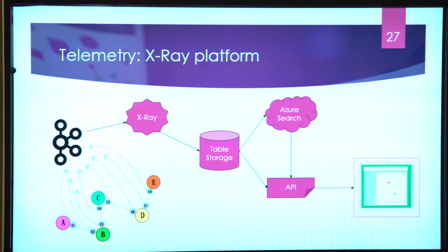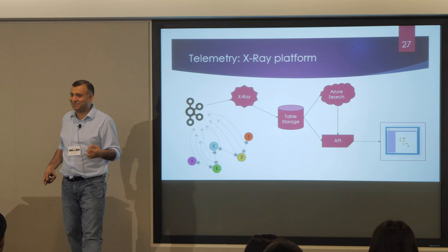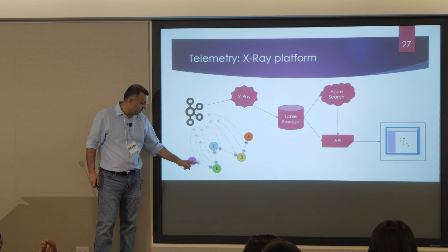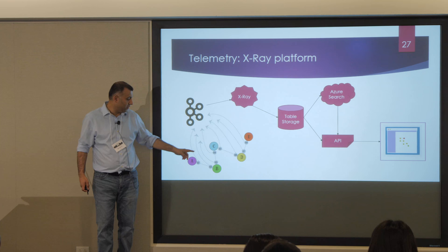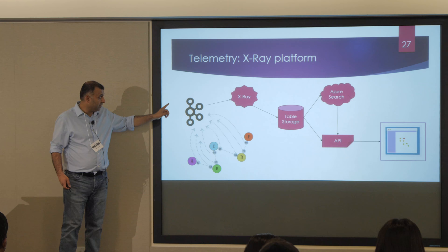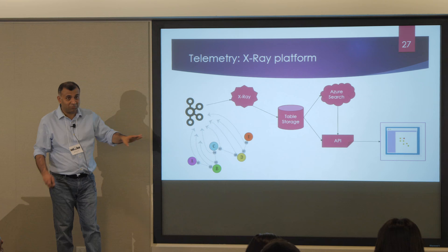For telemetry, we have the X-ray platform. With 1,000 services running, it's hard to visualize how information flows. Every time a service sends a message to another, it emits an event: 'Service A sent message to Service B, event E1.' Service B emits: 'Received message from Service A, event E2.' All these events flow through the message bus, get pulled into the X-ray platform, stored in table storage, and a dashboard lets you visualize and gain insight into how your system is actually operating.